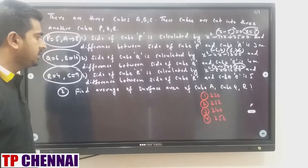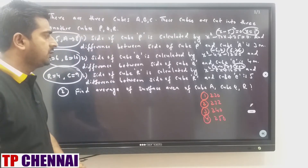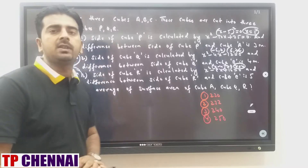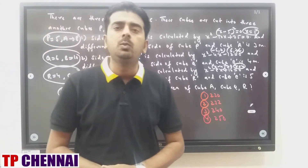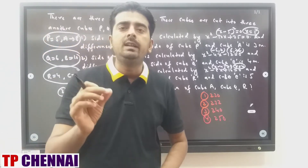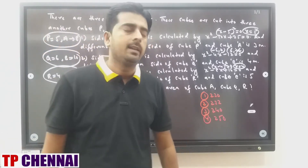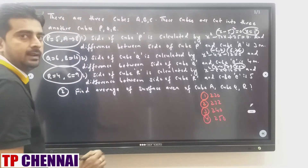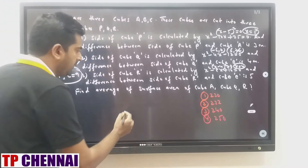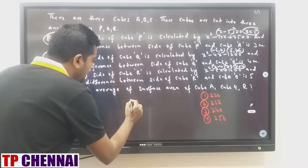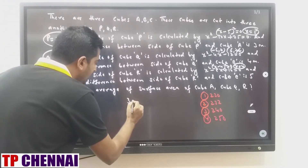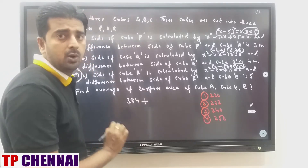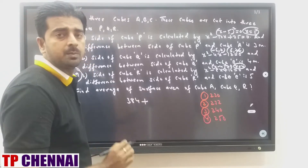Second question: find the average of surface area of cube A, cube Q, and cube R. Formula for surface area of a cube is 6 × side². Cube A: side = 8, 8² = 64, 64 × 6 = 384. All these should be your mental calculations, even while solving the main question.